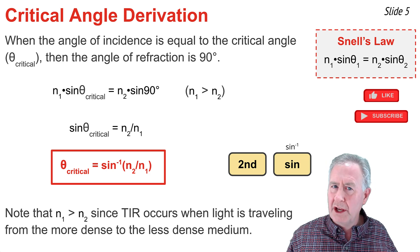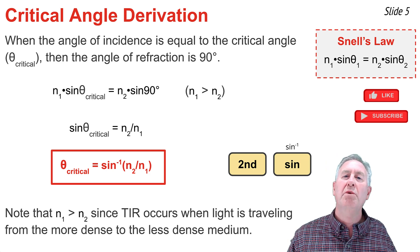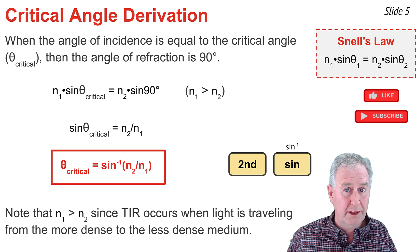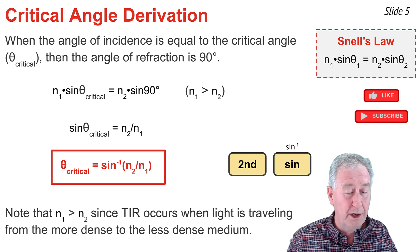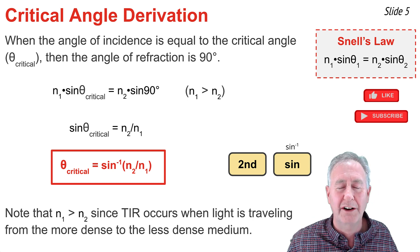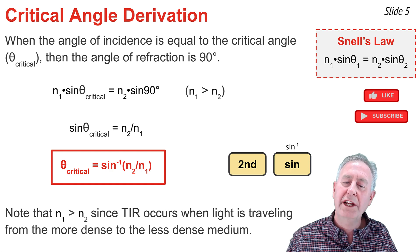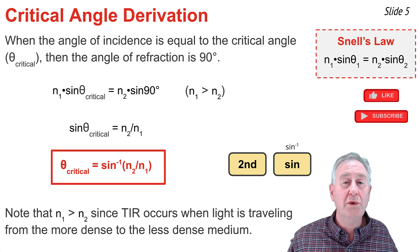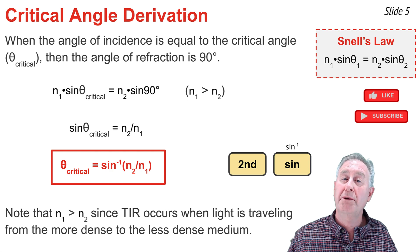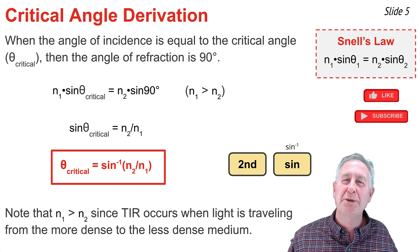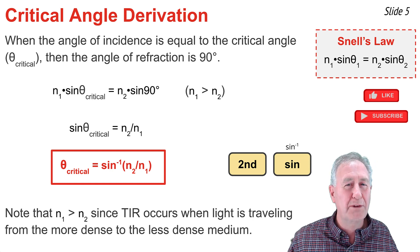If you were to reverse it, you would get a ratio of N2 per N1 that is greater than 1, and your calculator would tell you there's no answer. Translated to physics, that means you only get a critical angle when light is traveling from the material with the bigger index of refraction to the material with the smaller one — from more dense to less dense.